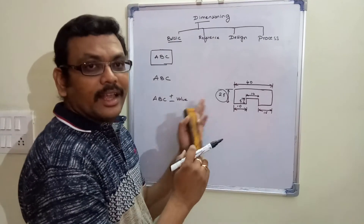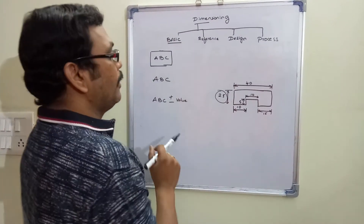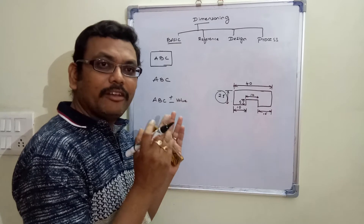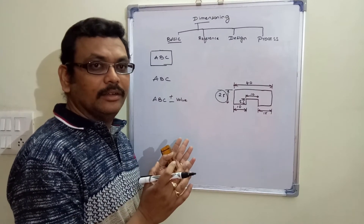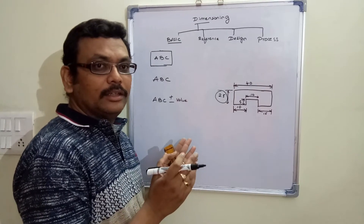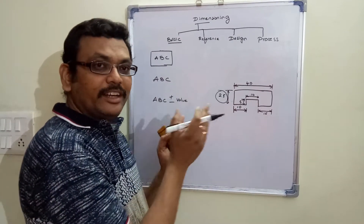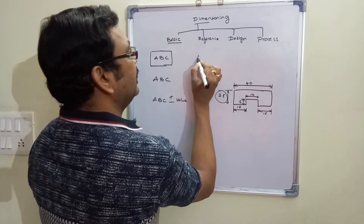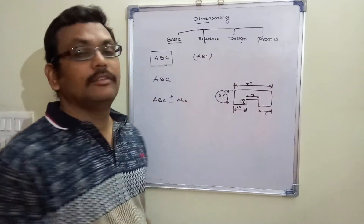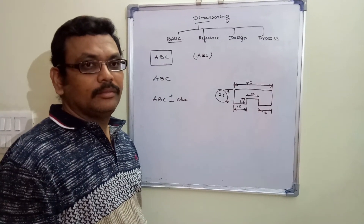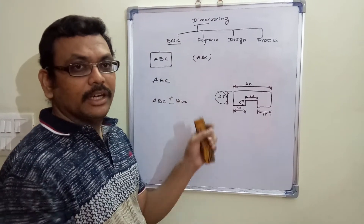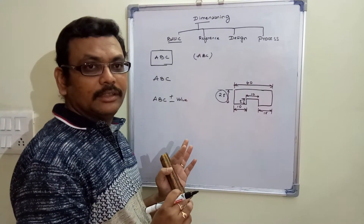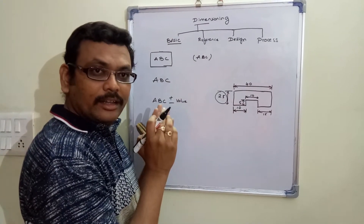Next is the reference dimension. A reference dimension is for reference and verification only. Whenever we have a doubt, we can use it for indication. It is not a mandatory dimension. It is indicated within parentheses — any dimension shown inside brackets is called a reference dimension.